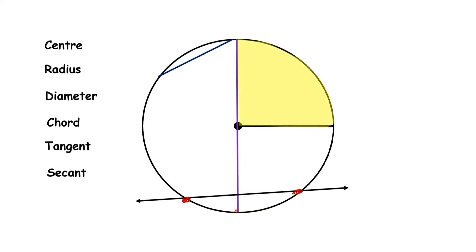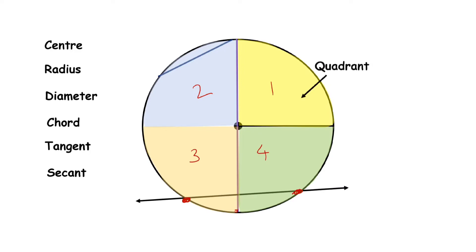Now you can see that here the circle is divided into four equal parts. Each part is called a quadrant.